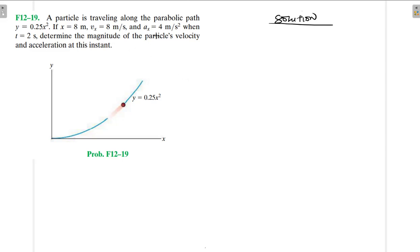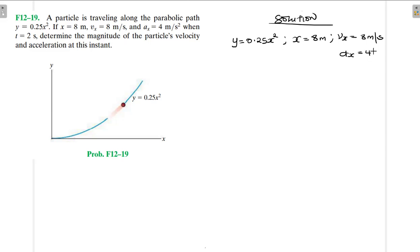We've been asked to find the magnitude of the particle's velocity and acceleration at the instant t = 2 seconds. Given: x = 8 meters, velocity in the x-direction vx = 8 m/s, and acceleration in the x-direction ax = 4 m/s² at t = 2 seconds.